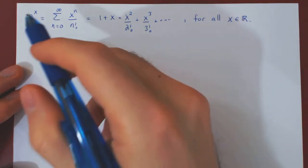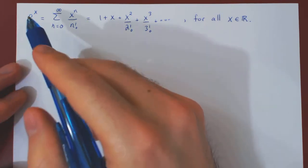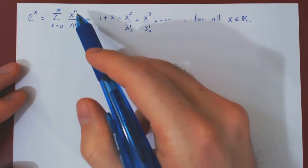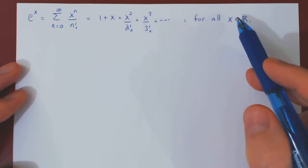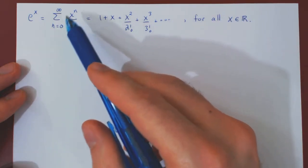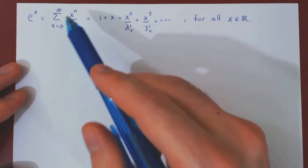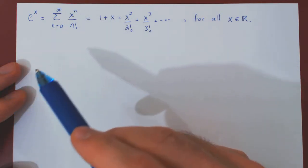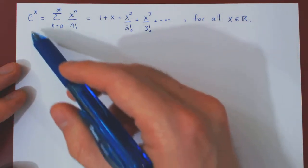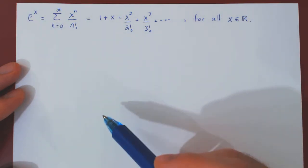In this video, we will prove with the help of Taylor's theorem that e to the x is equal to its Maclaurin series for all values of x. We already know from the ratio test that this Maclaurin series converges for all values of x. What's not obvious is that it actually is equal to e to the x for all values of x.